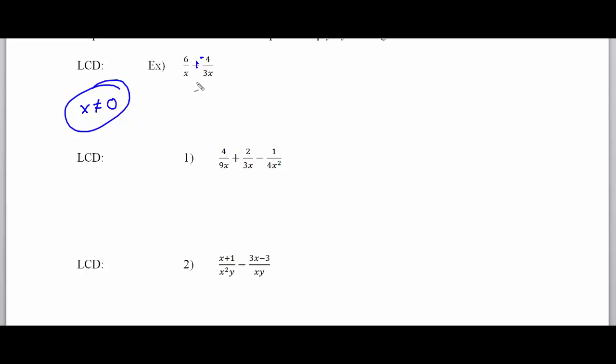This is important for a future section of our rational chapter together when we're actually solving for x with rationals that we look at excluded values. So the more we do this now the less we have trouble later. So here's what I'm going to do. I'm going to look at the first fraction as 6 over x and say to myself what would be a common denominator between x and 3x. And that answer for the lowest common denominator is 3x.